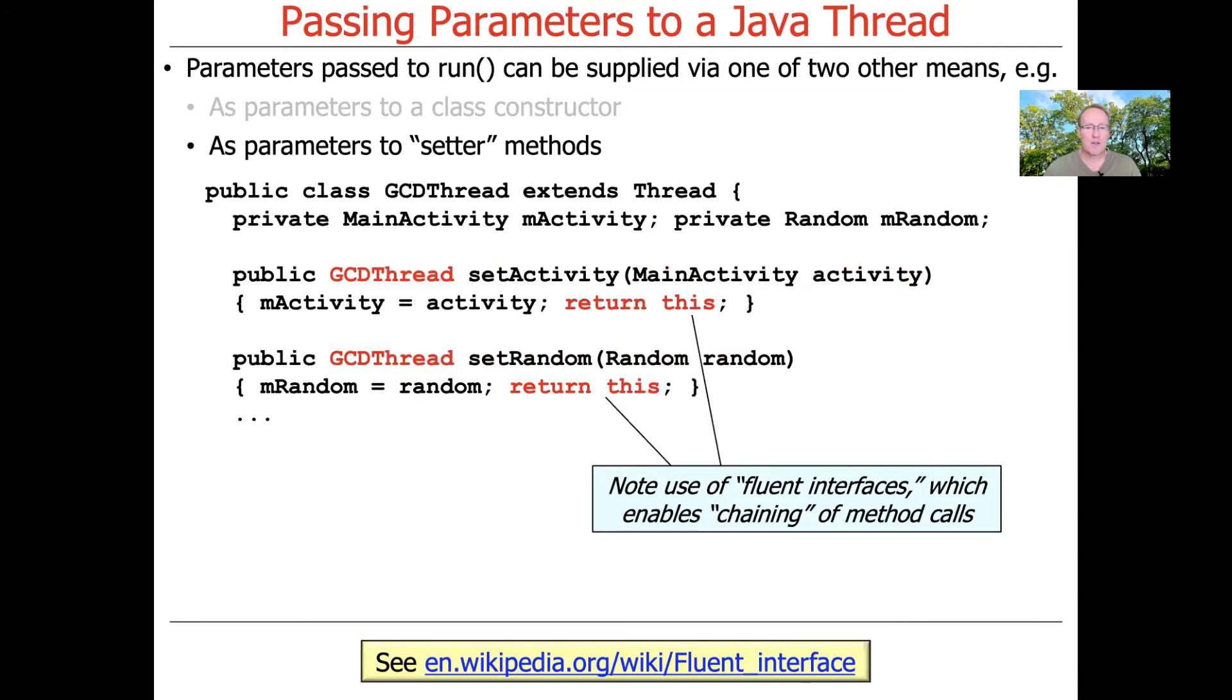We do this in order to be able to support so-called fluent interfaces. So you should take a look at the link below, something called the fluent interface pattern, which I think was first documented by Martin Fowler, although I'm sure it was done well before he came along. And it enables the chaining of method calls.